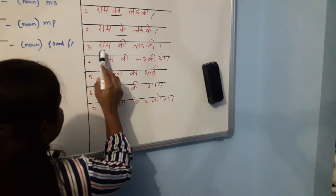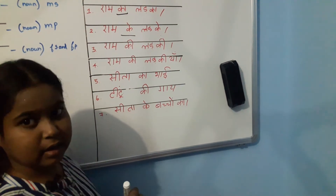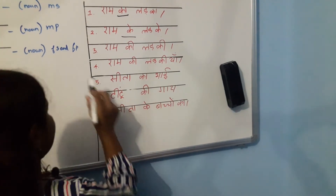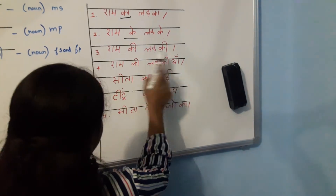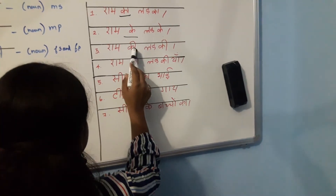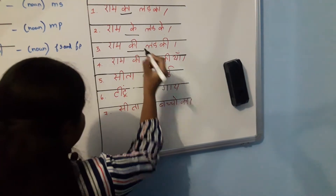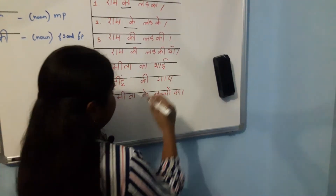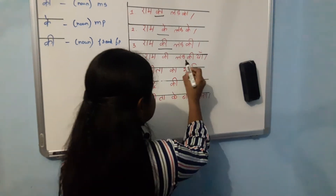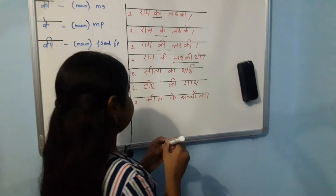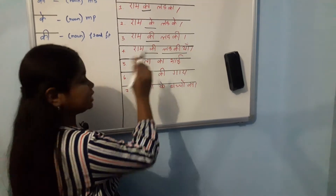Ram Khi Ladu Khi — meaning Ram's daughter. 'Ladu Khi' is feminine singular, so 'Khi' is used. Ram Khi Ladu Khi also means Ram's daughters — 'Ladu Khi' in the plural. For both feminine singular and plural, 'Khi' is used.